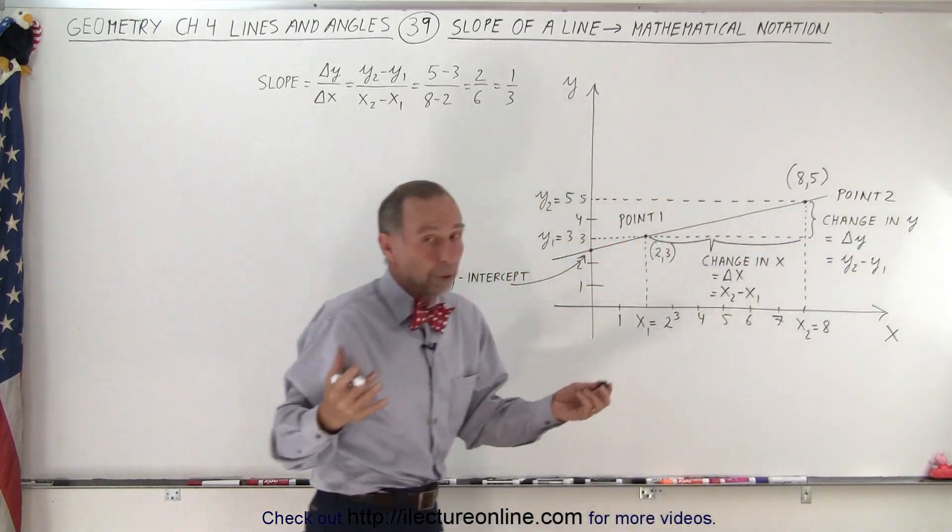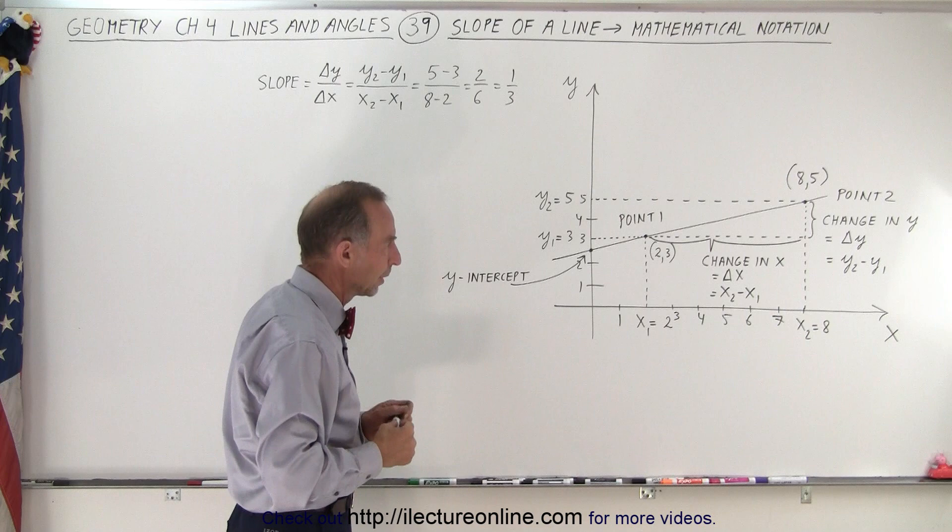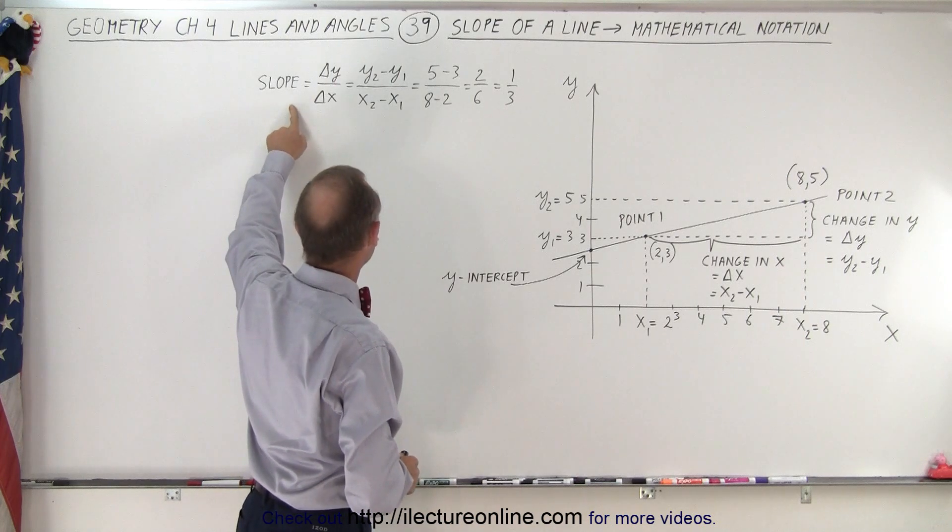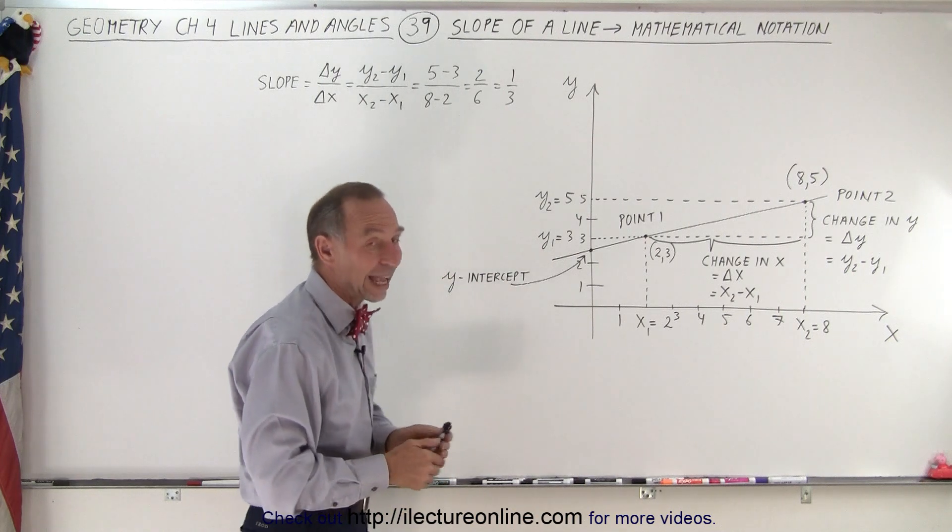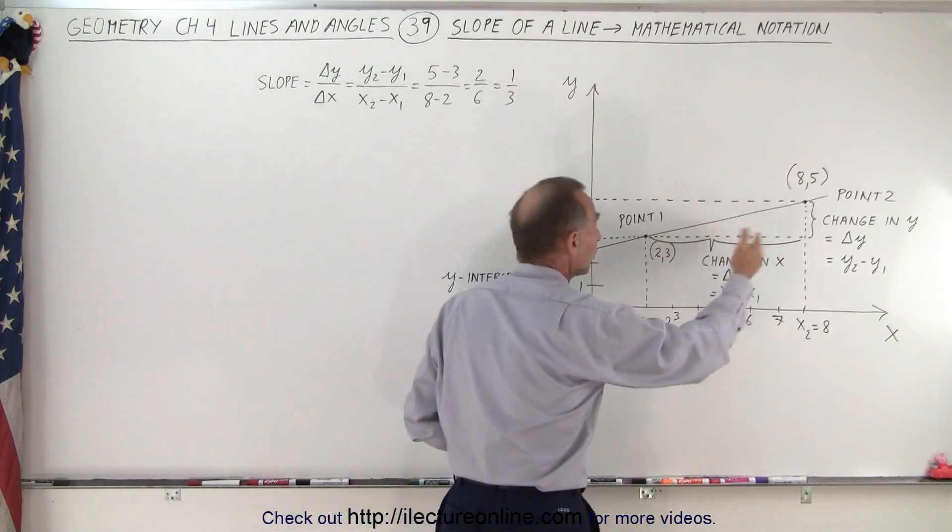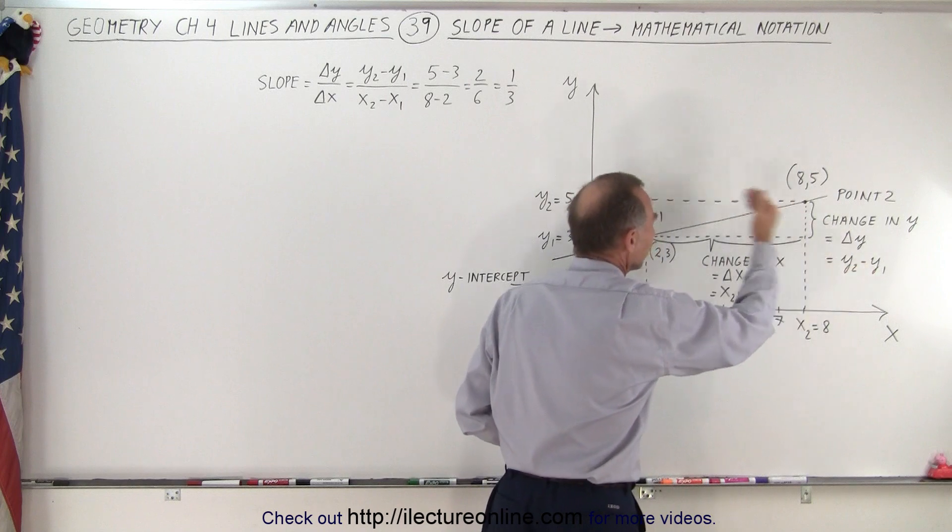And we can actually pick any two points on the line—it doesn't really matter. But then to calculate the slope, we need the change in the y-direction divided by the change in the x-direction, as we go from P1 to P2. And P2 must always be to the right of P1.